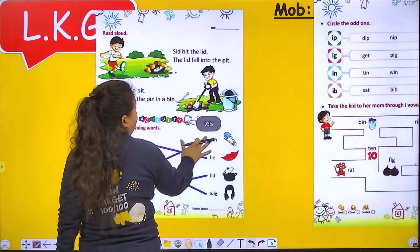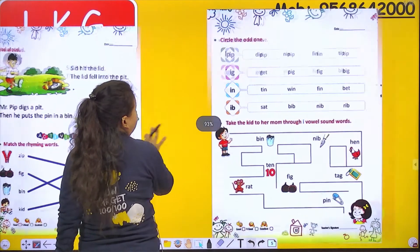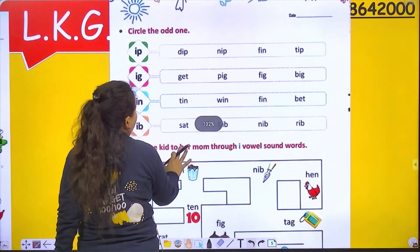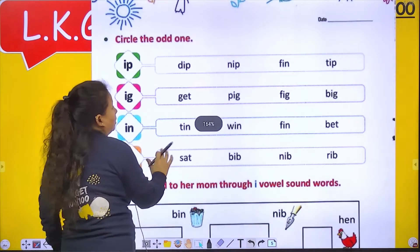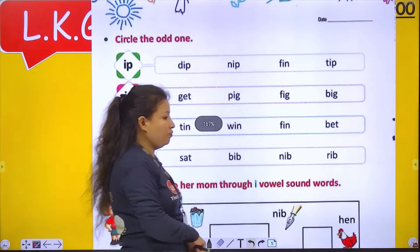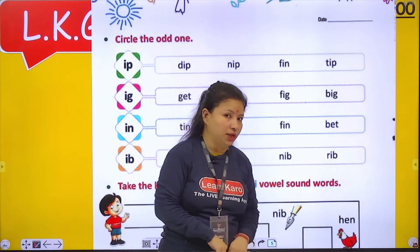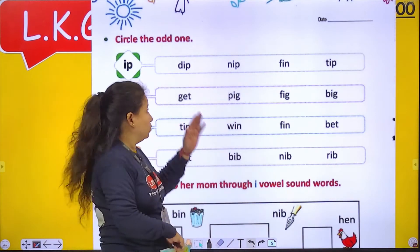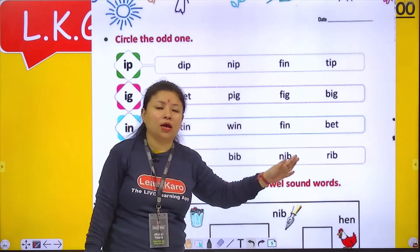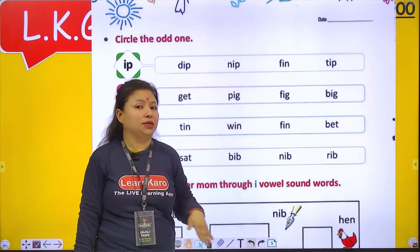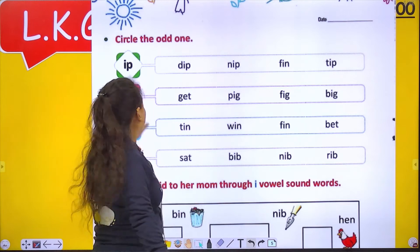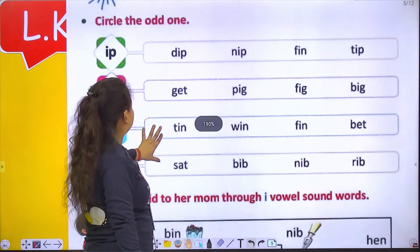Now turn to the next page. Circle the odd one. It means jo isme se odd hai or different hai, usse hamei circle karna hai. So here are some sounds.